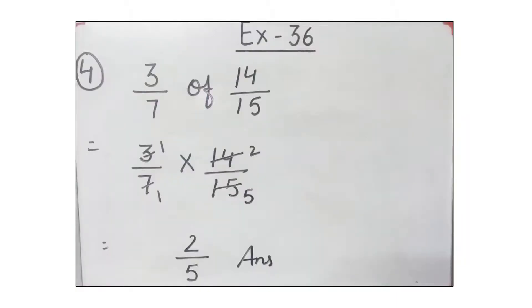Look at another question of exercise 36: 3 by 7 of 14 by 15. You know very well what is the meaning of OF. Multiply. 3 by 7 multiply 14 by 15.